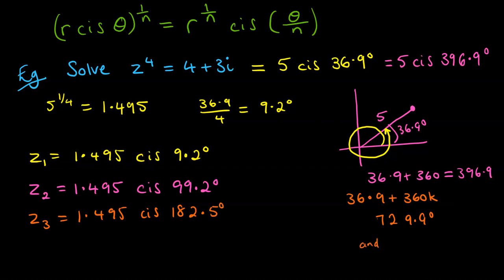And then our last one, we'll do another 360° like so, and dividing that by 4 to get our fourth solution here. We've got 1.495 cis 272.5°.